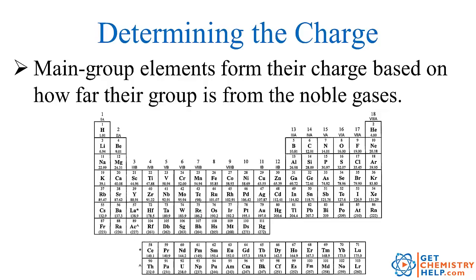First, let me show you how we can determine the charge of monoatomic ions. For the main group elements, it's pretty easy. The main group elements are those that are in what are called the A groups — 1A, 2A, 3A, all the way over to 8A. So, the left two columns and the right six columns. These are called the main group elements.